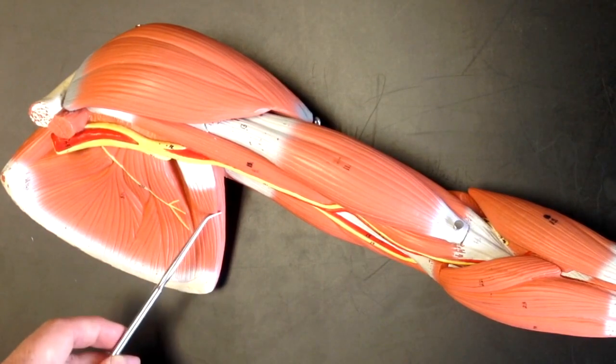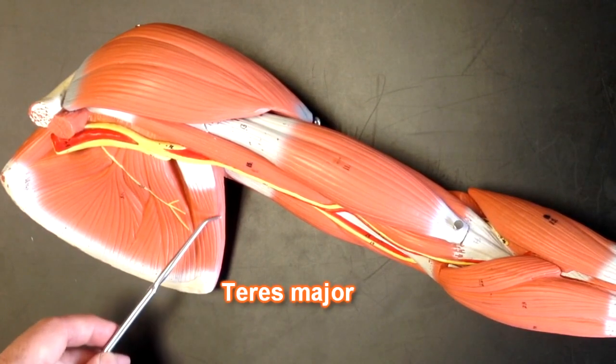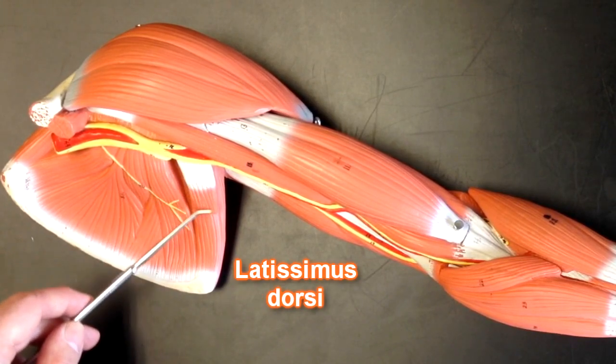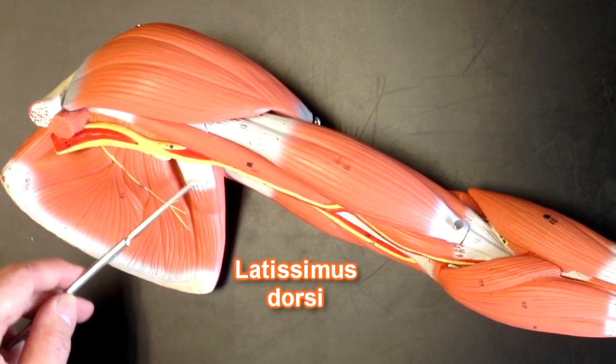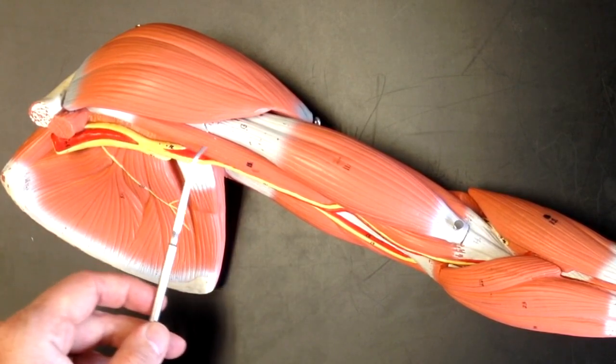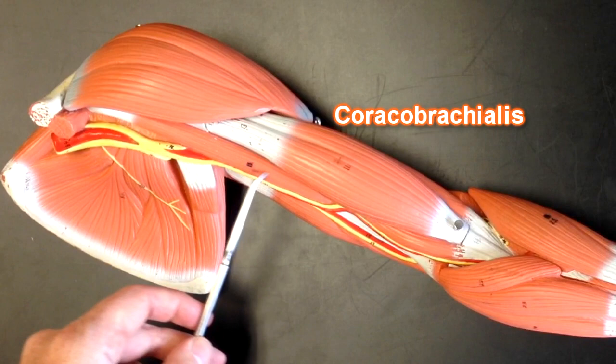This muscle right here is the anterior portion of the teres major muscle. And this right here is the cut edge of the latissimus dorsi muscle. This muscle right here is the coracobrachialis muscle.